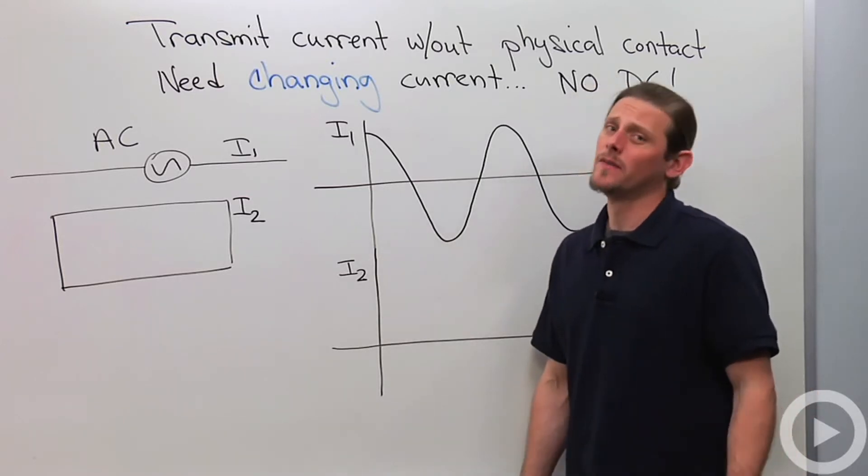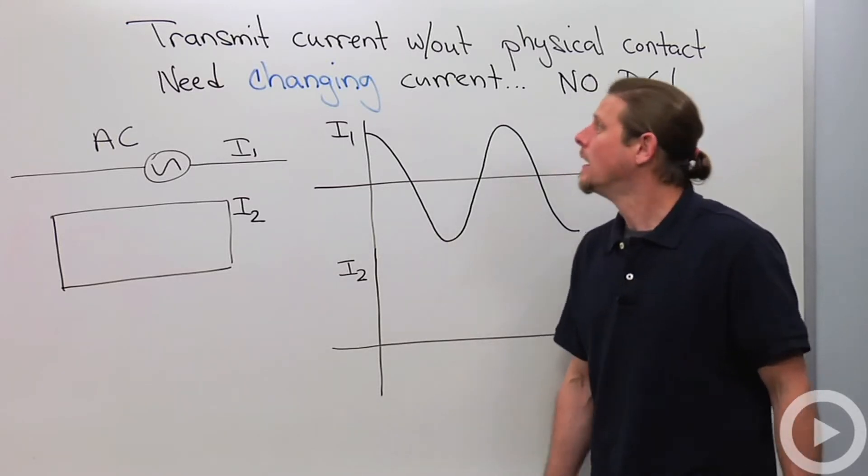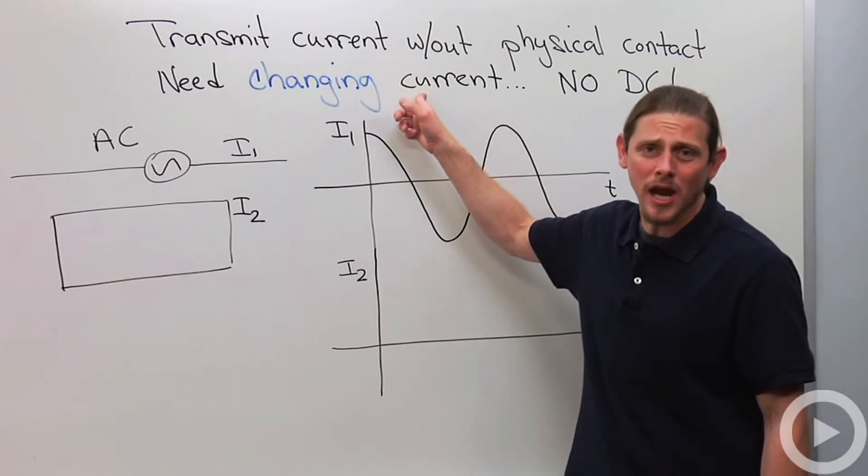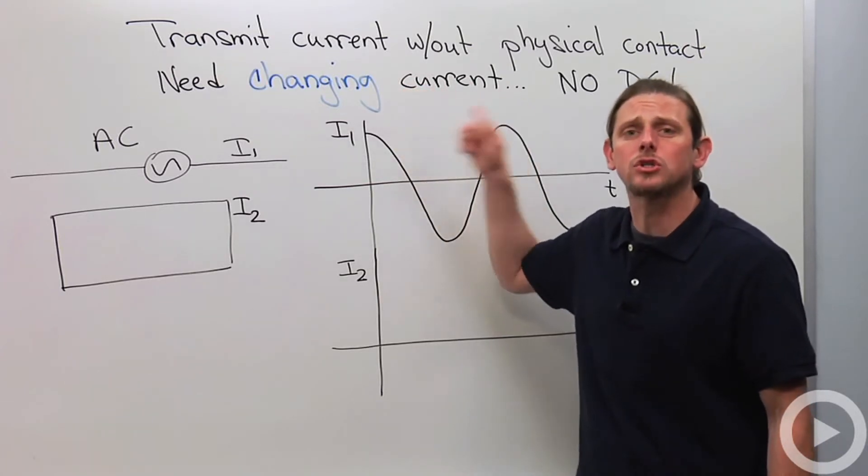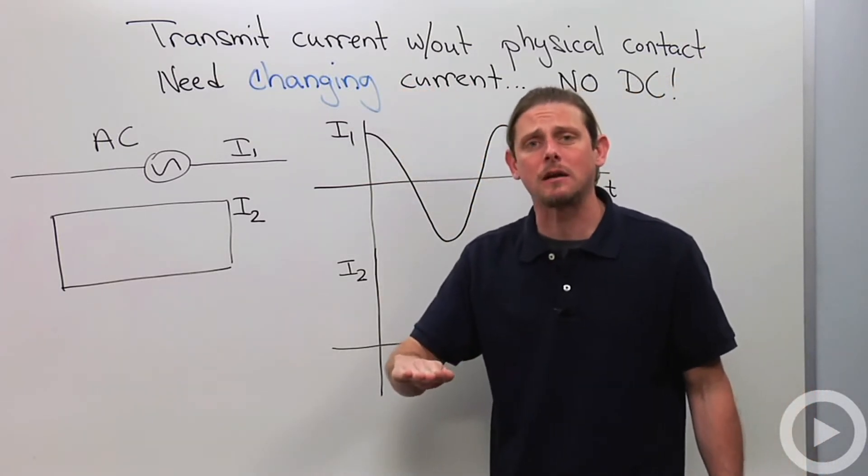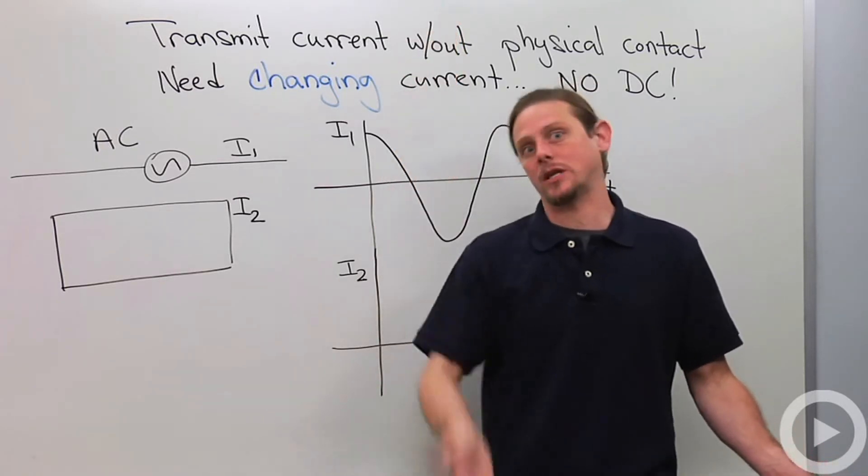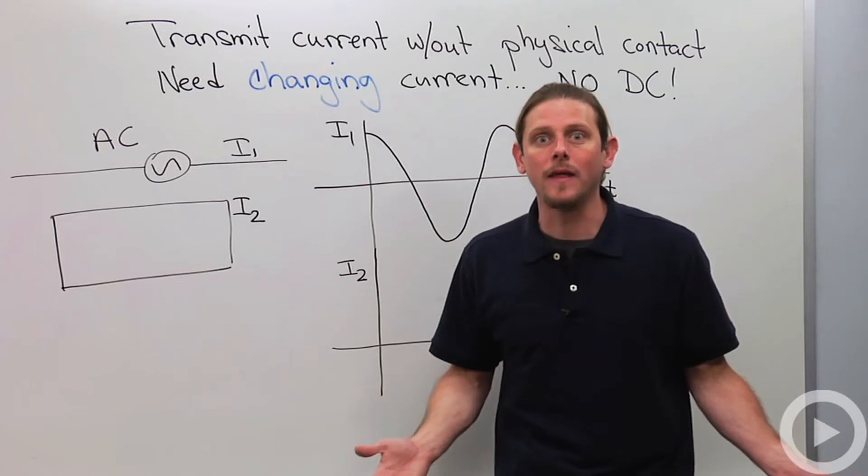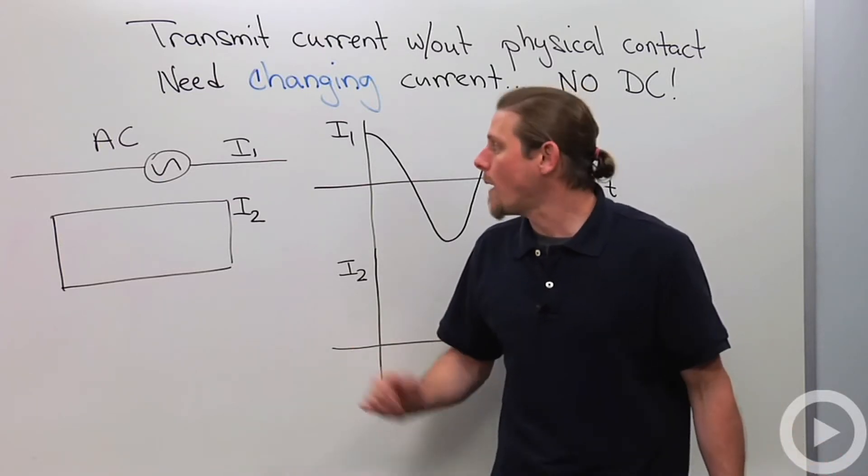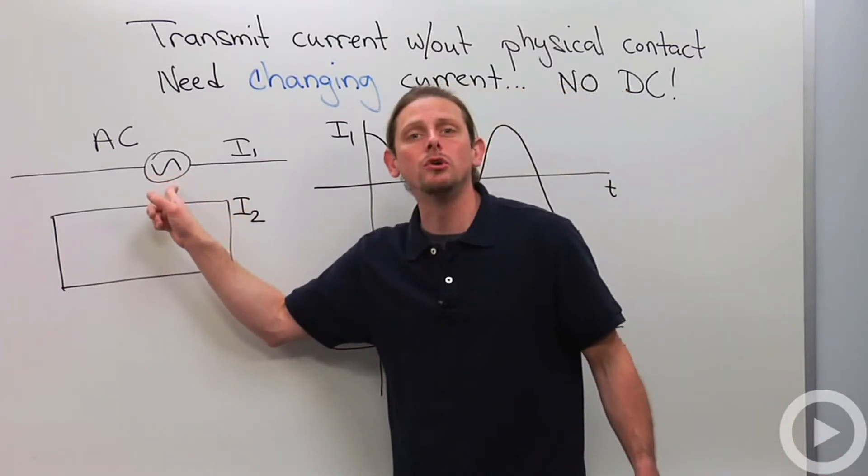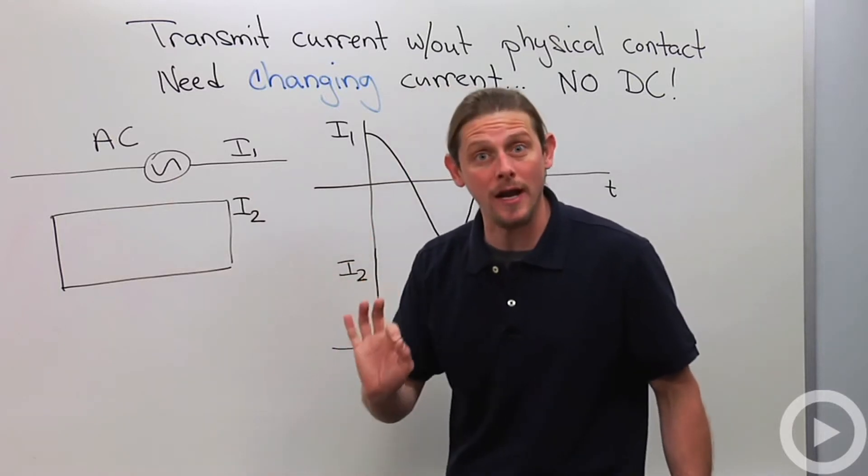One important thing about this that made Edison very unhappy was that it requires changing current. You cannot do this with just a standard DC current because you would just have to increase the current and just keep on increasing it. That's not sustainable.